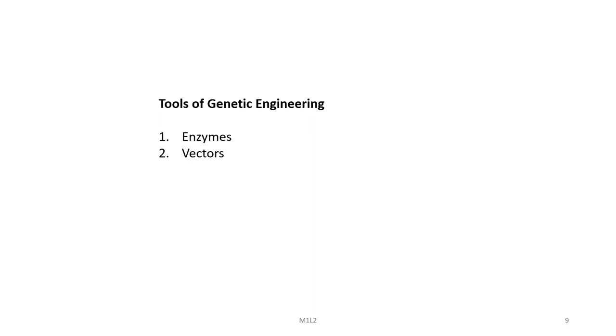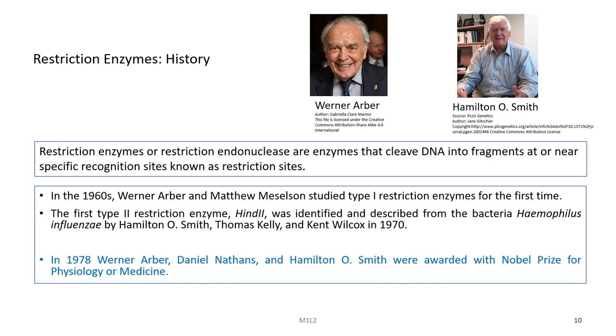Now let us focus on what are the tools of the technique of genetic engineering. This is basically a kind of molecular carpentry where a lot of cutting and joining work is involved, as in the case of making furniture. For cutting we require enzymes, as well as for modification of DNA ends or fragments. Then we need vectors, as we have seen in the earlier slide, for carrying the targeted gene into the host organism.